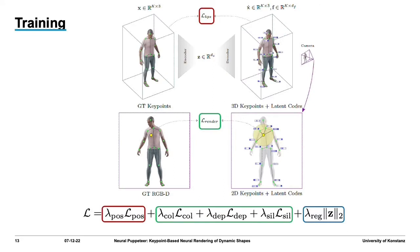All network parameters are trained jointly using a loss consisting of three parts. First, we have a keypoint reconstruction part. Second, we have a rendering loss between the color, depth, and occupancy masks. Additionally, we regularize latent variables in their norm, which roughly encourages a zero-mean Gaussian latent distribution.